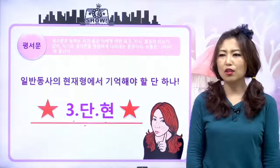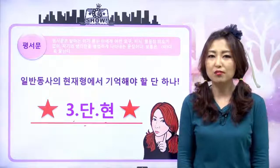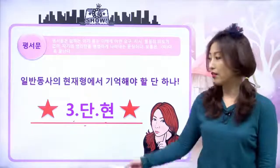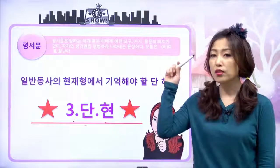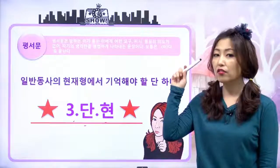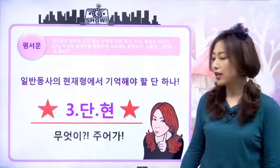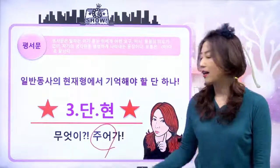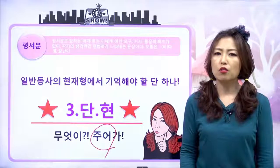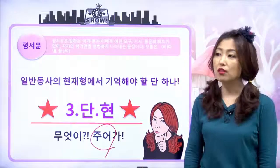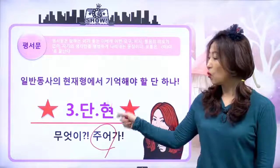삼단현. 선생님, 삼단현이 뭐예요? 먼저 기억하세요. 삼단현은 주어의 이름이에요. 힌트: 현재형이니까 현은 현재겠네. 그럼 삼, 단은 뭔지 한번 살펴볼까요? 삼인칭, 단수. 라는 얘기예요. 삼단현에서 삼인칭, 단수. 그리고 시제는 언제? 현재. 그래서 삼단현의 주어일 때 이 동사가 변하는 거예요.